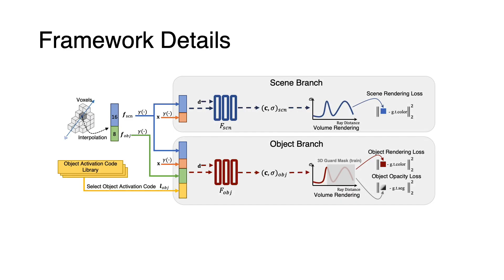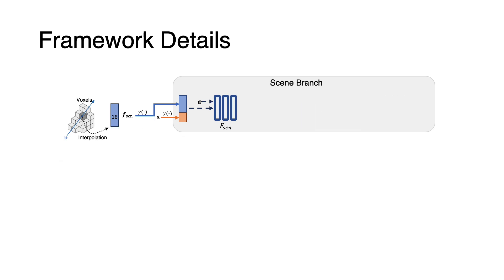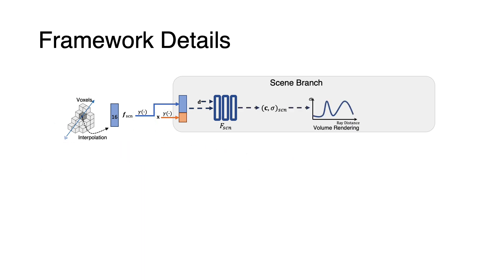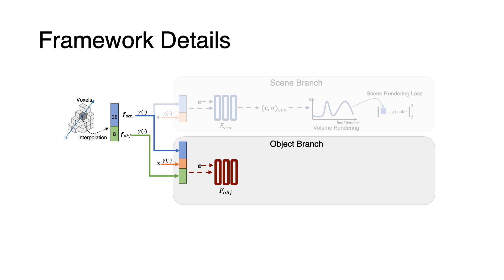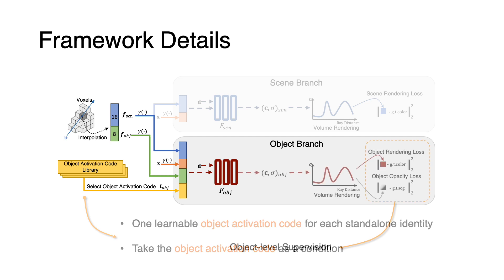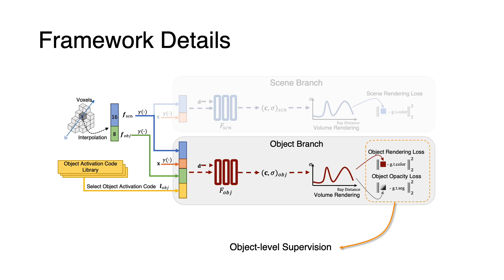Next, I will go into a bit more detail on our framework. The scene branch takes input as a combination of the structure of NSVF and NeRF to keep more details of the scene, and we follow traditional NeRF for rendering, supervised with photometric loss. For the object branch, in order to control which object the network renders, we additionally take the object activation code as a condition and jointly optimize it during the training process. We add object-level supervision to the rendered color and opacity, and take special actions to handle object occlusion when training on clustered real-world scenes.